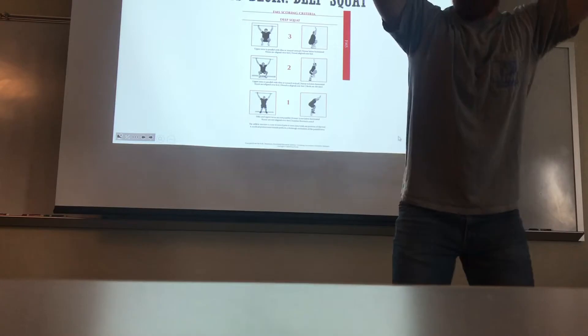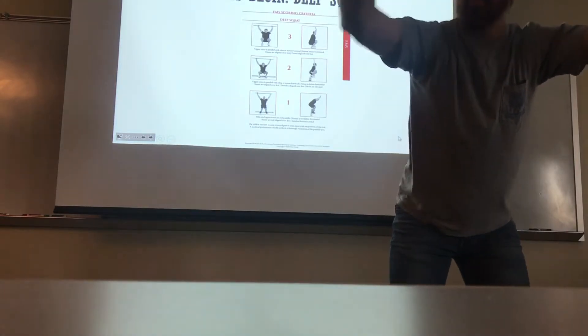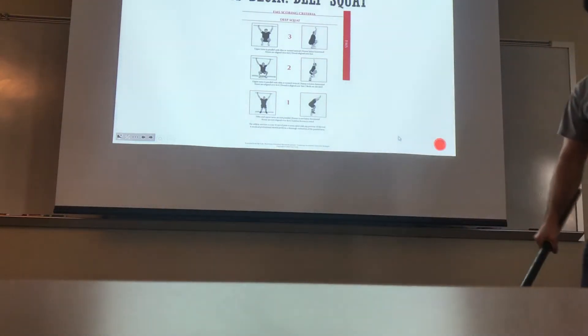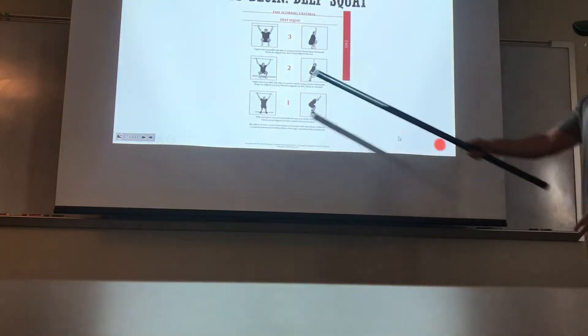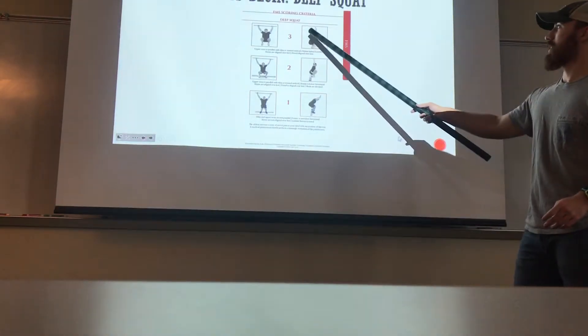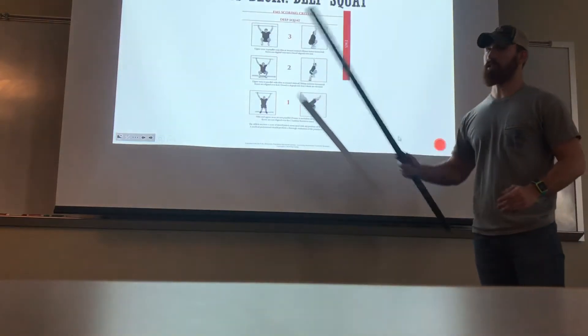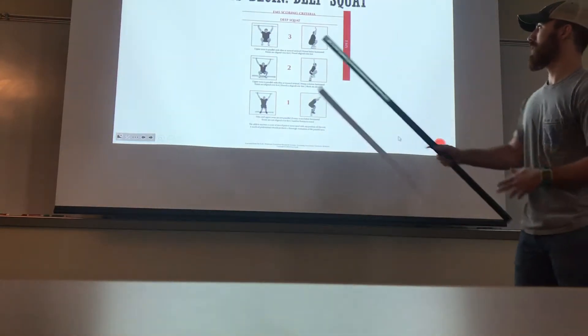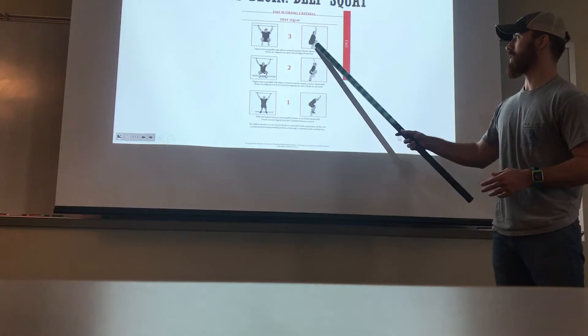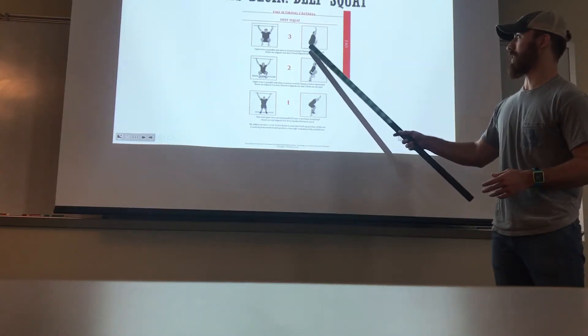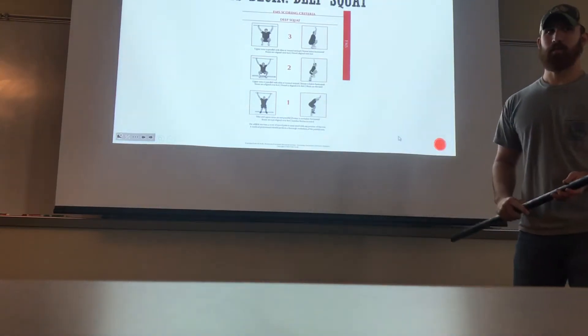And you want to try and keep that dowel locked in over your head like this. You don't want it coming down. You don't want excessive trunk flexion, and you want to be able to get down parallel or past parallel. That's what this guy right here does perfectly. He keeps the dowel over his head, his feet stay straight pointed forward, his heels don't come off the ground, and he's perfectly parallel with the ground.